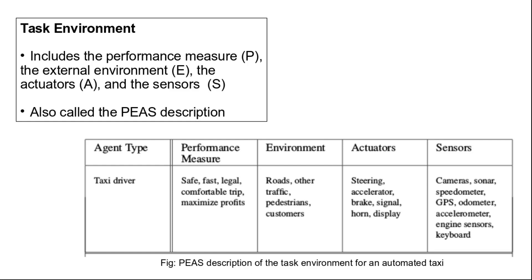And whether it is maximizing profits by reducing the amount of fuel consumed. The environment for this agent would include the different types of roads, other traffic present on the road, pedestrians, and also the customer who is riding in its car. The actuators would include the steering wheel, the accelerator, the brake, signal, horn, and the display. And the sensors would include cameras, sonar, speedometer, GPS, odometer, accelerometer, engine sensors, and the keyboard.